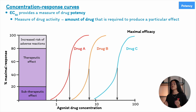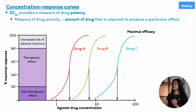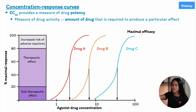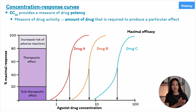The EC50 indicates the concentration needed to reach half of the maximum effect. It is a value on the x-axis of the graph, not the percentage of the response. So the potency of a drug is measured by the EC50 value.